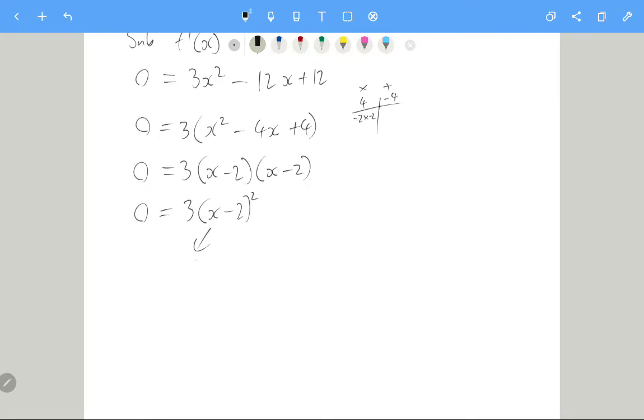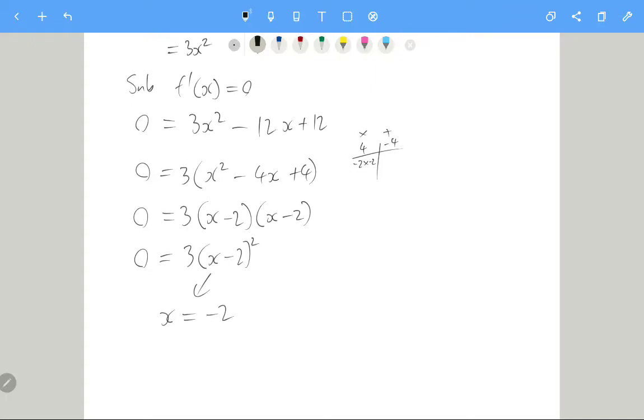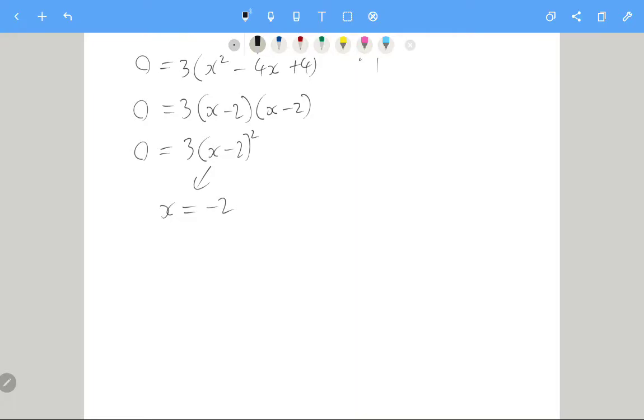So we've only got one solution here, which is that x must be equal to -2. So the first thing we want to do is actually classify this. We know this is a stationary point because the gradient is equal to 0. What kind of stationary point is it? So let's do one of those tables up.